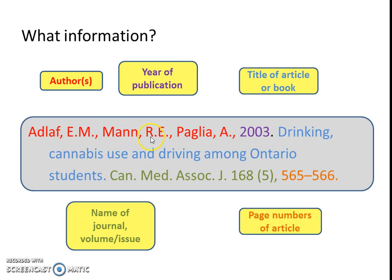Last name, first initial, middle initial. And we ask ourselves why in this order — is it alphabetical? Well, it appears so, but it isn't. It's actually an order that the authors decide. The first one is usually the lead or head author and researcher. Next, we have the year of publication — in this case, 2003.